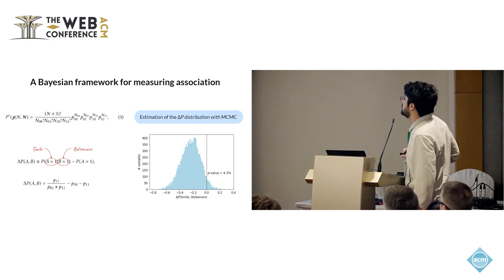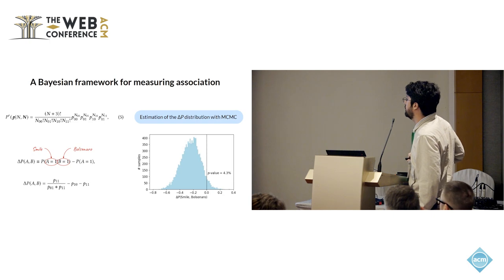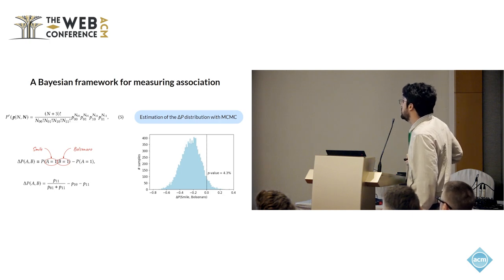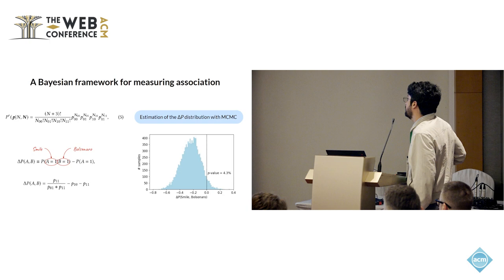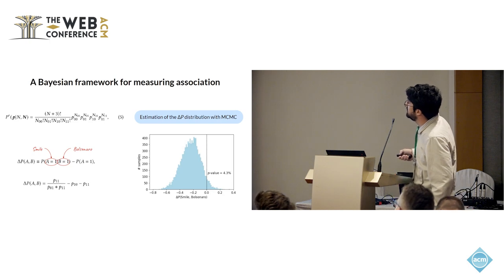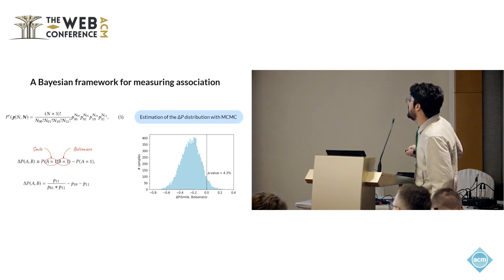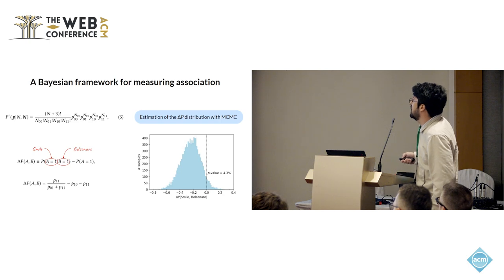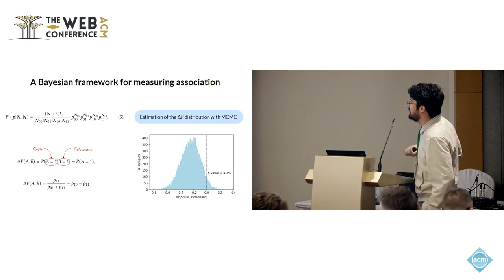After running this process, you get an estimate of the posterior probability distribution of the added value — specifically, the probability boost of finding a smile when you have the former president Bolsonaro. You can see the distribution peaks below zero, meaning the expected value indicates opposition. The p-value — the probability that this added value is positive — is less than 5%, so this is actually a statistically significant detection. Interestingly, from very low statistics you can still find significant results.